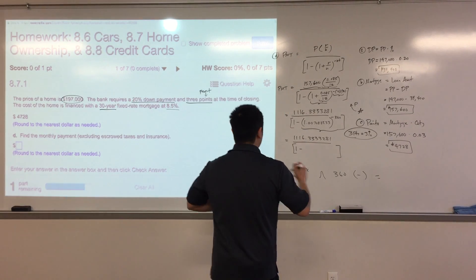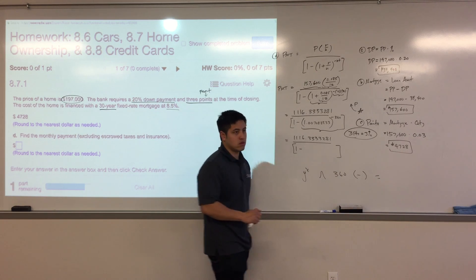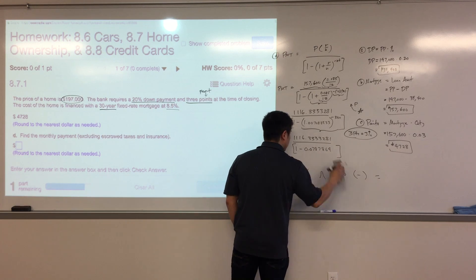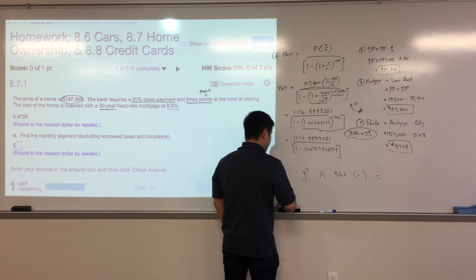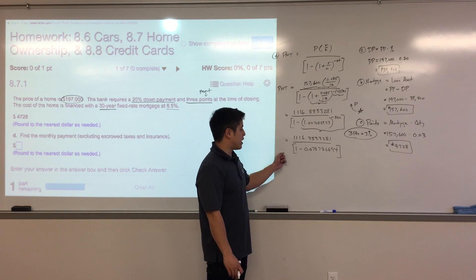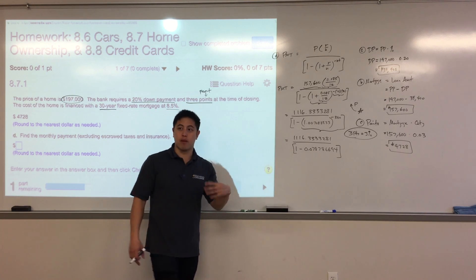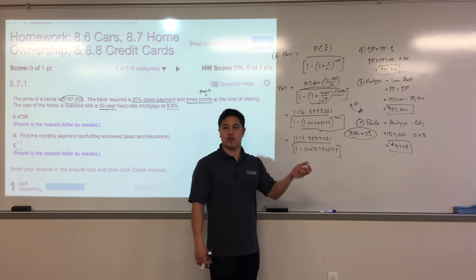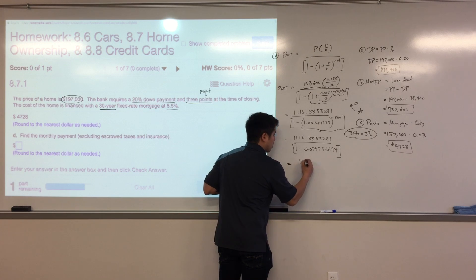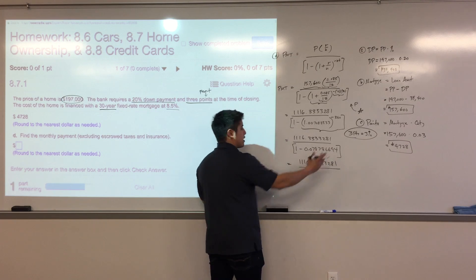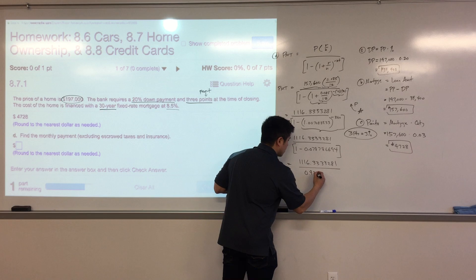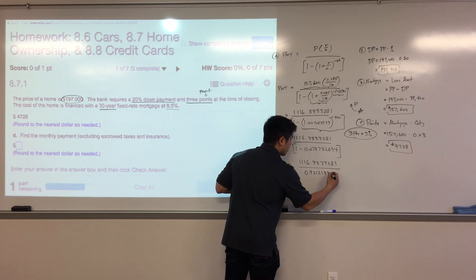The value of 1.00708333 to the negative 360 is approximately 0.078786694. Then compute 1 minus that value, which gives approximately 0.921213. To avoid rounding errors, preserve as many decimal places as possible until the very end.